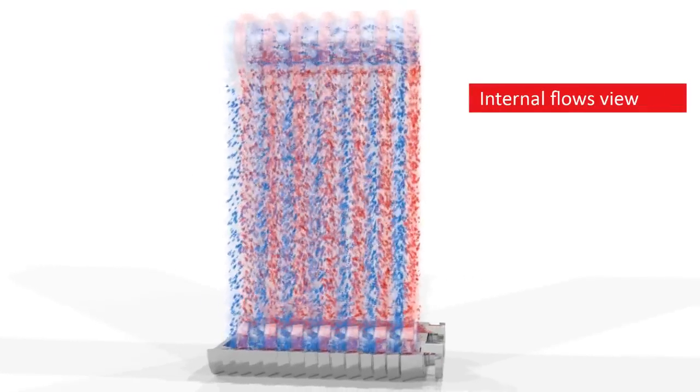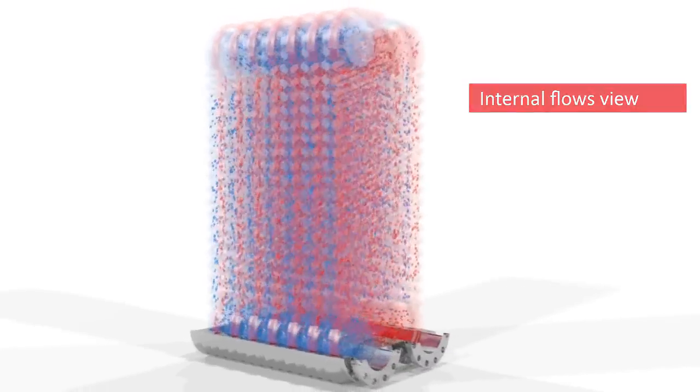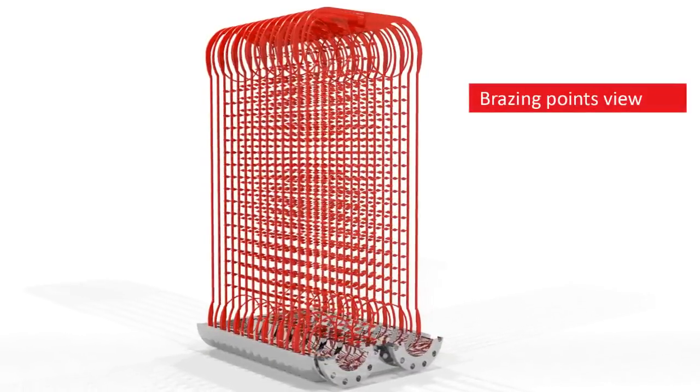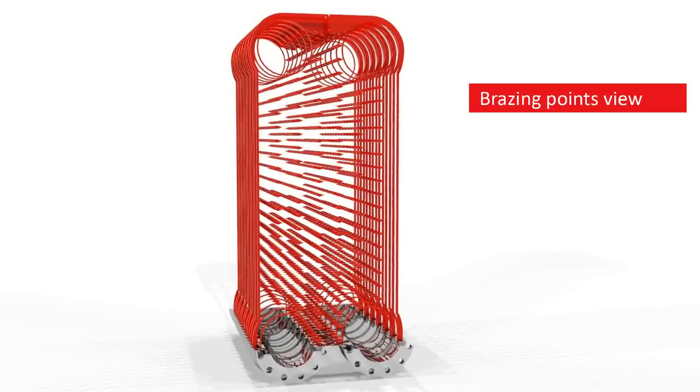If we could look inside a BPHE, we would see the numerous brazing points that hold the unit together. Brazing the plates together means there is no need for rubber gaskets. This prevents leakage and ensures low maintenance costs.